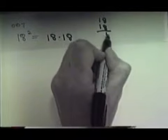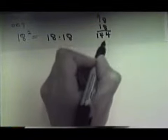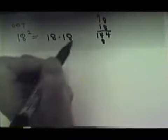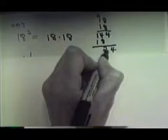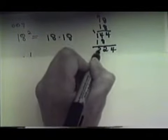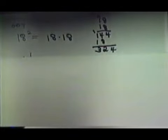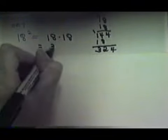8 times 8 is 64. Carry 6. 8 and 6 would give us 14. 1 times 8 is 8. 1 times 1 is 1. So if we add that up, we'd end up with 324. So 18 squared would give us 324.